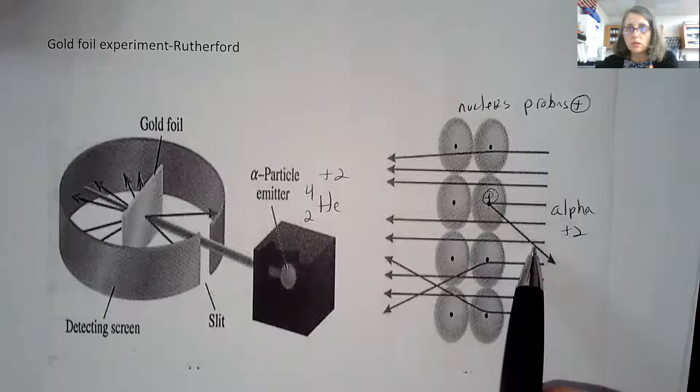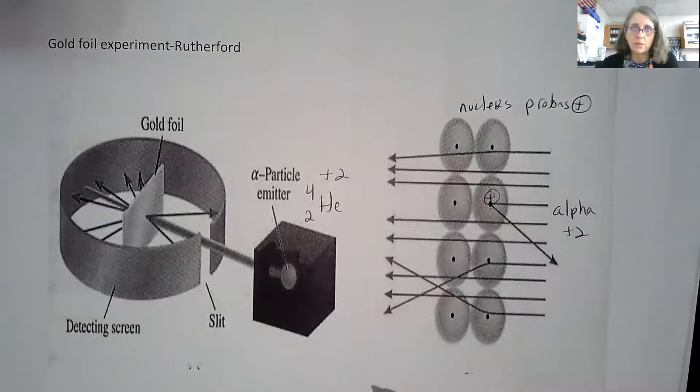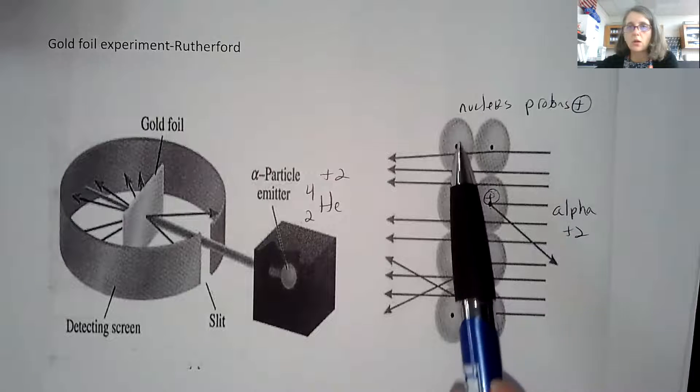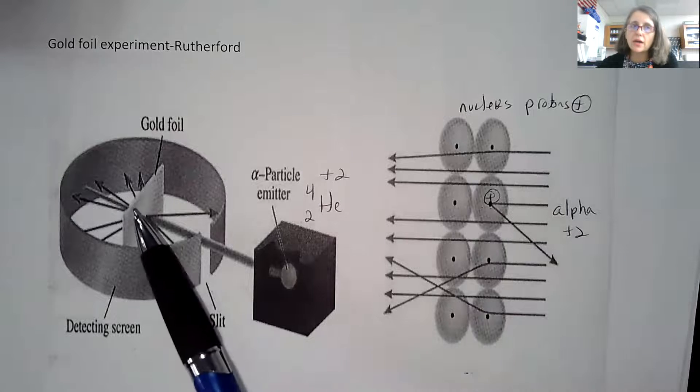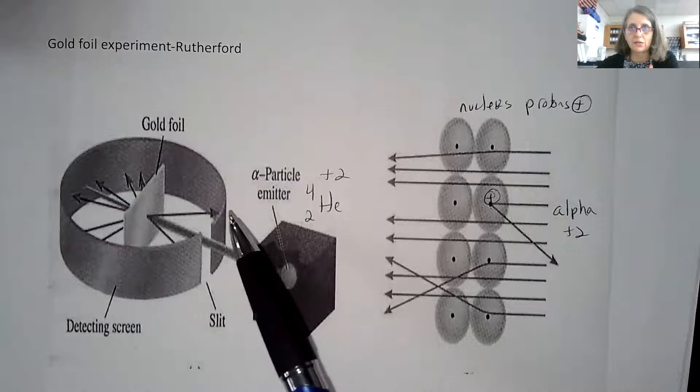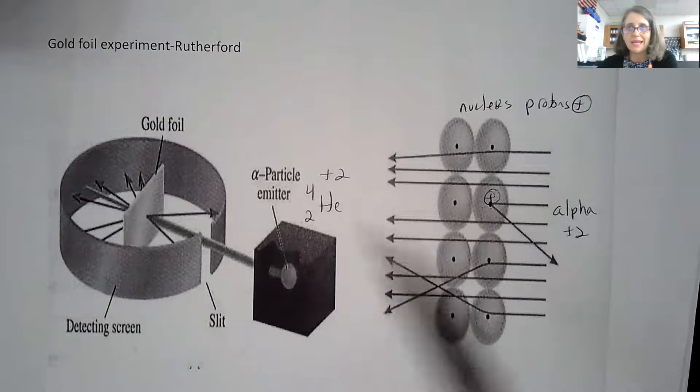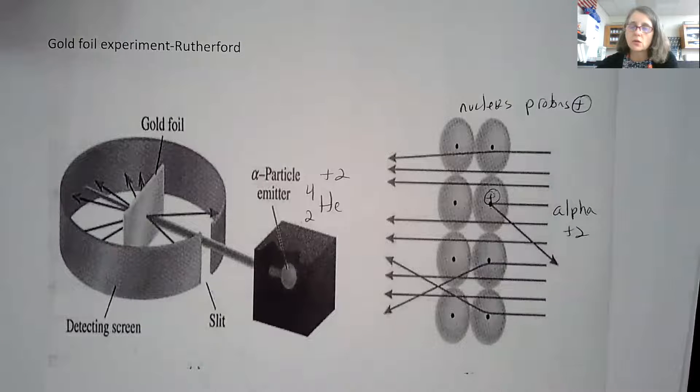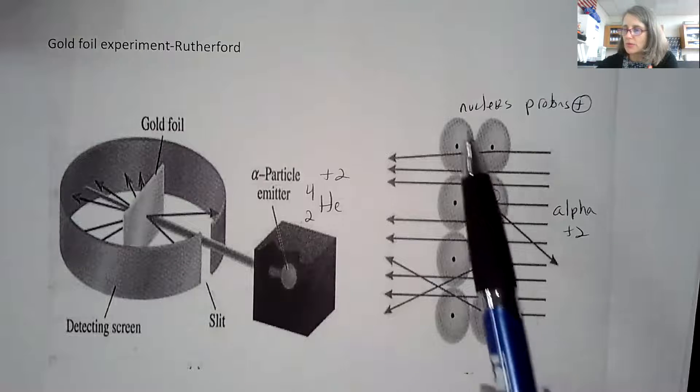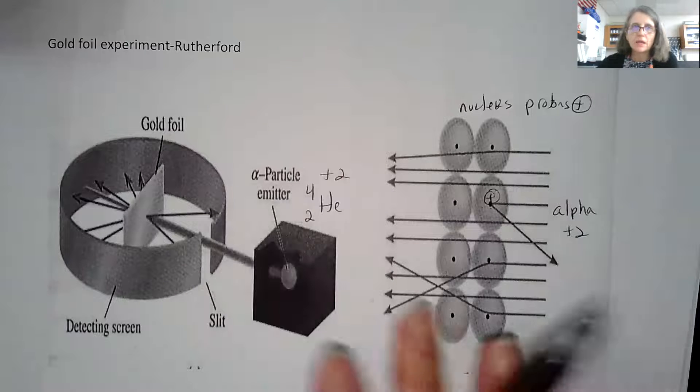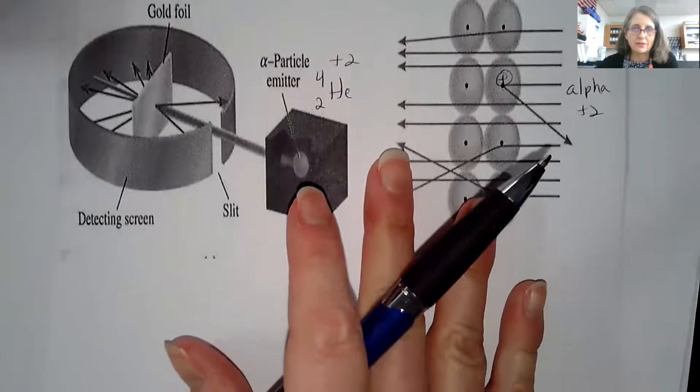That was not expected when Rutherford did this experiment. He thought that the protons were all over, so he thought he would get all kinds of deflection. He thought he would keep hitting over and over again. He had the idea of what they call the plum pudding model of the protons being all interdispersed in the atom, but Rutherford disproved that.